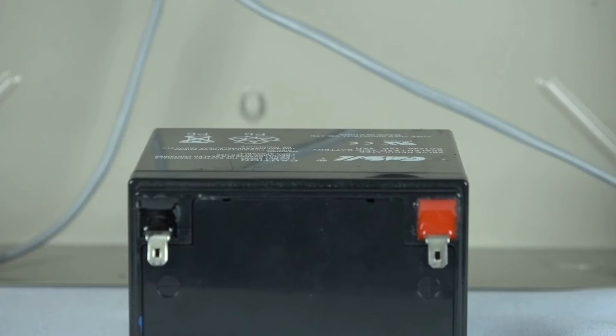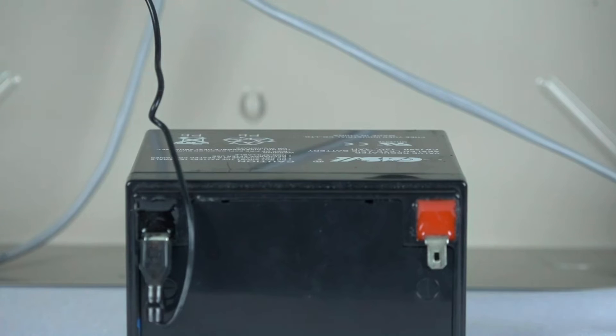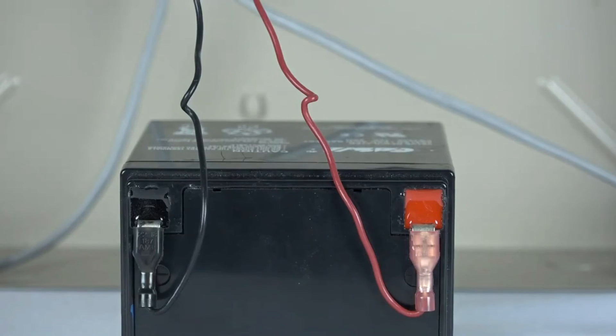You can now connect your battery. Using the wiring harness attached to the panel the black wire will connect to the black terminal on the battery and the red wire will connect to the red terminal.